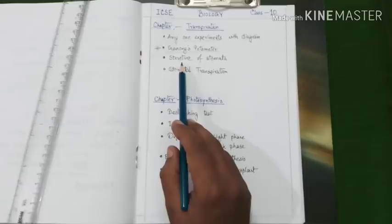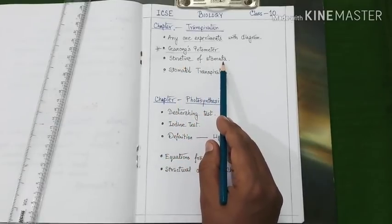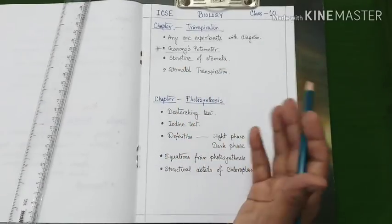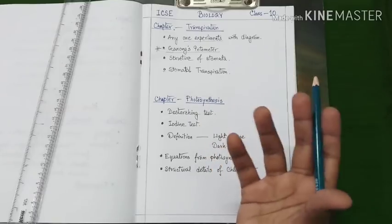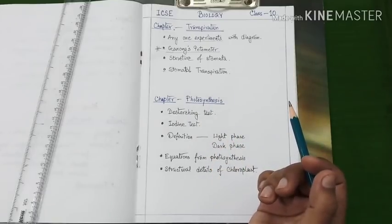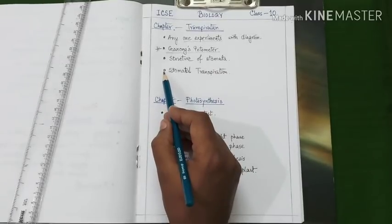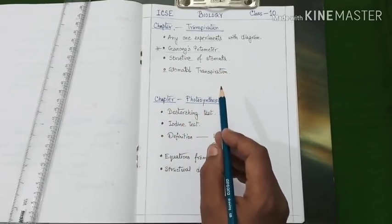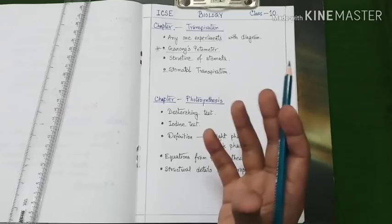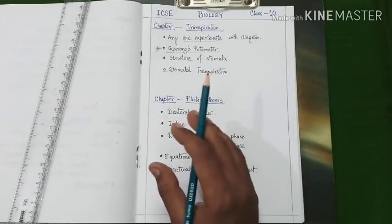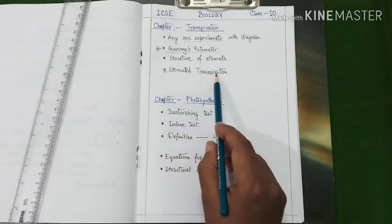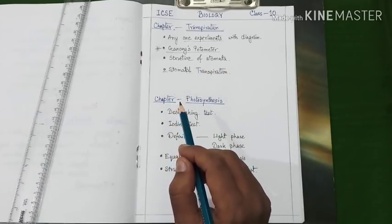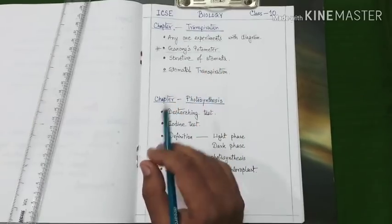Our next topic is structure of stomata. You may be asked to draw the open or closed stomata, or may be asked to label different portions of a given diagram. Our next topic is stomatal transpiration. We all know that 90% of plant transpiration takes place through stomata. So you have to prepare the detailed mechanism of stomatal transpiration along with the diagram. So these are the important topics from transpiration.